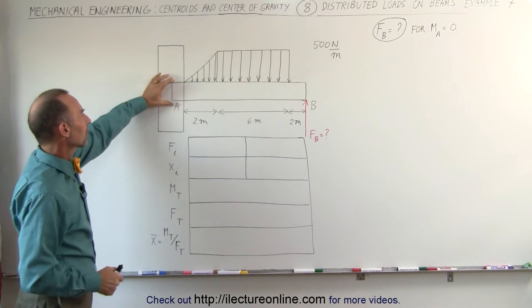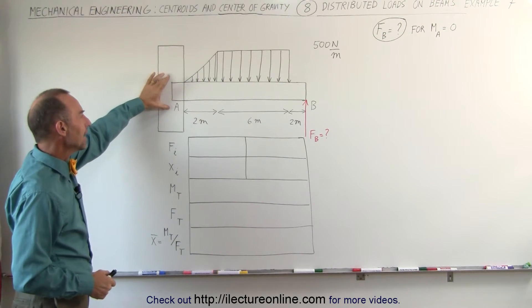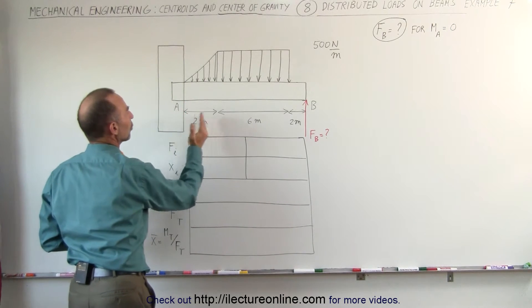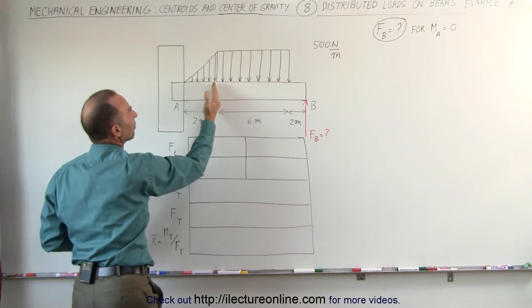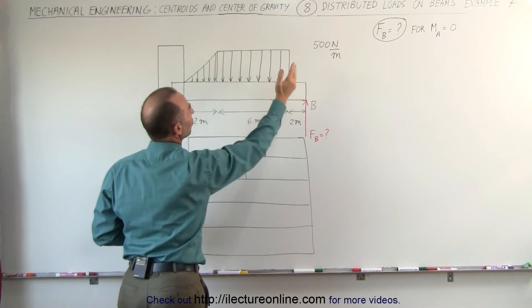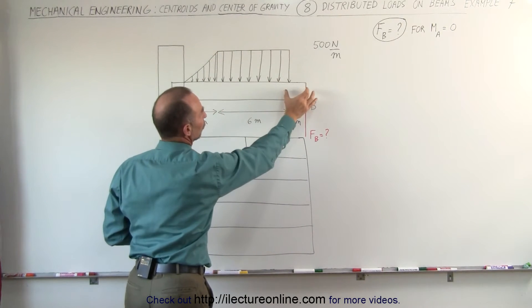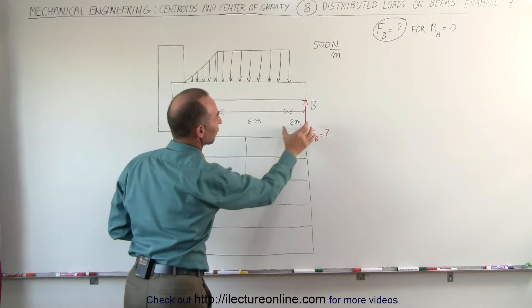Notice that the beam is stuck here in the wall, supported at A. We have a distributed load from 0 to 2 meters that increases from 0 to 500 N per meter. Then it stays constant for the next 6 meters at 500 N per meter. Notice no load towards the end of the beam for the last 2 meters.